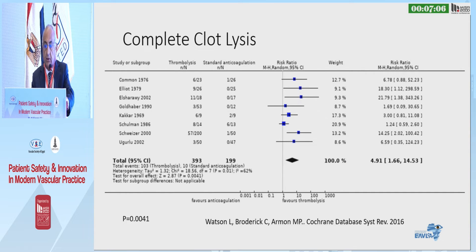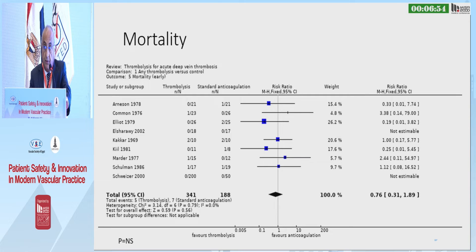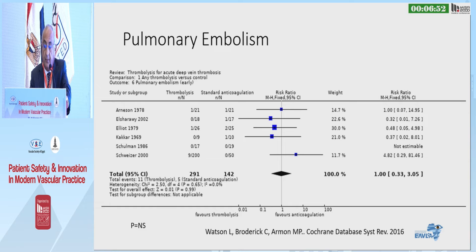Also, there is more clot lysis in the thrombolytic group as compared to the anticoagulation group. However, there are more bleeding complications in the thrombolytic group. There was no difference in mortality, and remarkably, there was no difference in pulmonary embolism between the two groups.